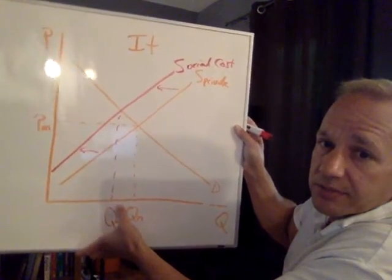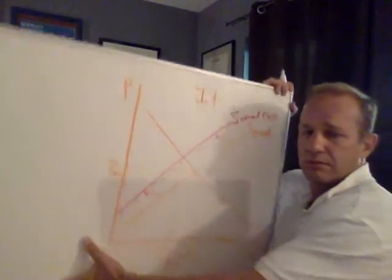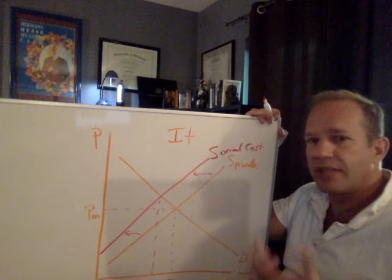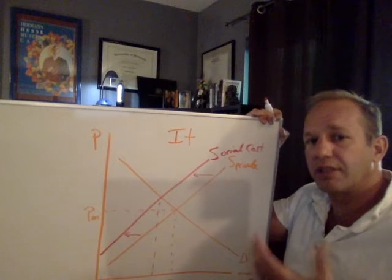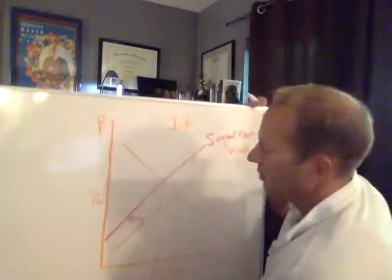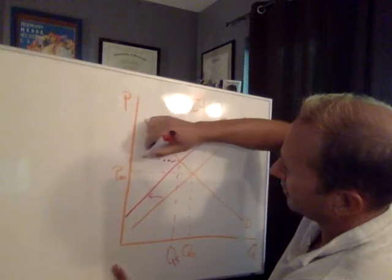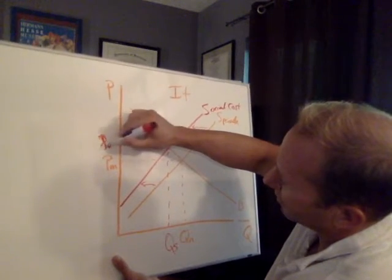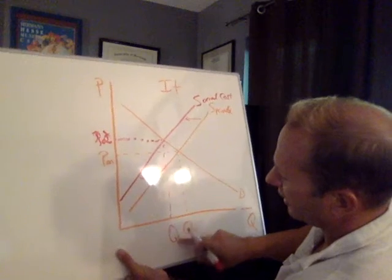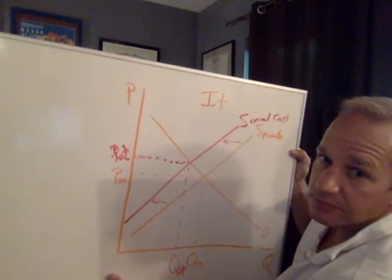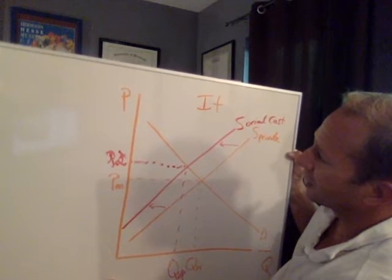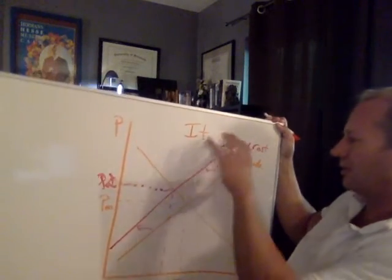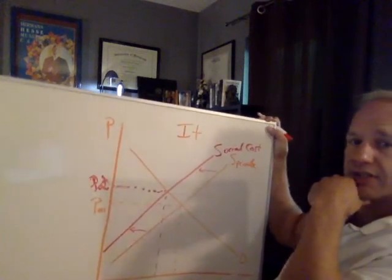How much should the good cost? Should it still be at PM so people can afford it? No, that doesn't make sense. If we factored in the costs, the price should be higher. I put an S down here for social, but I'm going to change my notation. The optimal price should be higher and the optimal quantity should be lower. This is our typical supply and demand framework illustrating the effects of a negative externality.